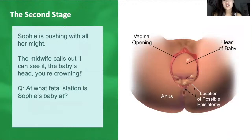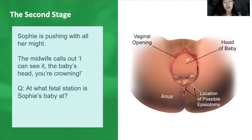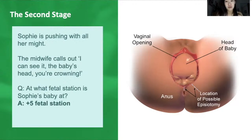The midwife calls out that the baby's head is crowning. What fetal station is Sophie's baby at? The answer is plus five fetal station — discussed in part two. You can see in the diagram that the head of the baby is just coming out, clearly visible at the vaginal introitus. This cephalic presentation is most typically what would be seen in Sophie's case.